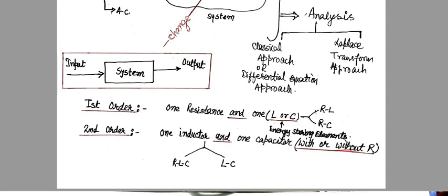When we are talking about the first order system, first order system consists of one resistance and it can consist of one inductor or one capacitor. It means the circuit must be an RL circuit or an RC circuit.